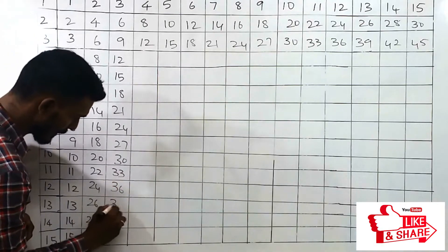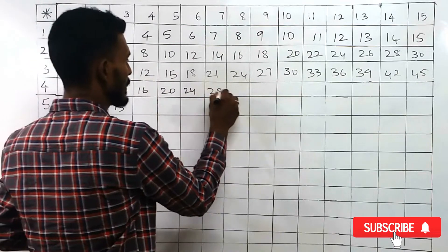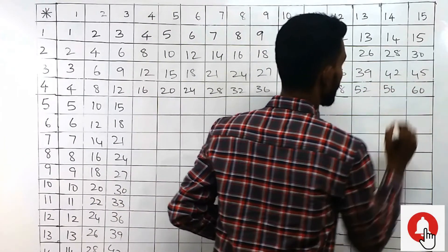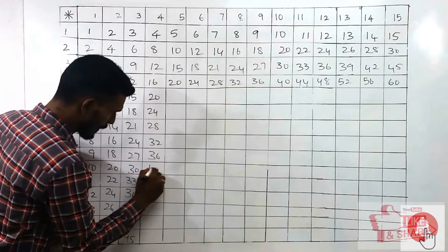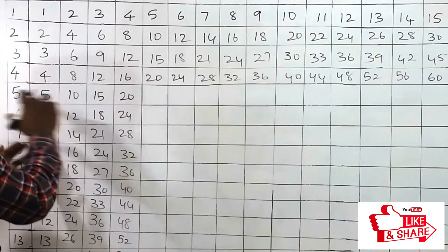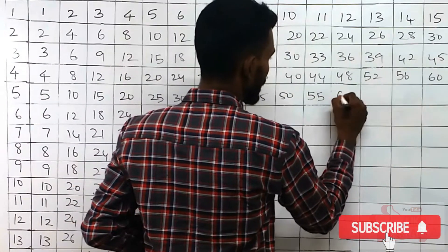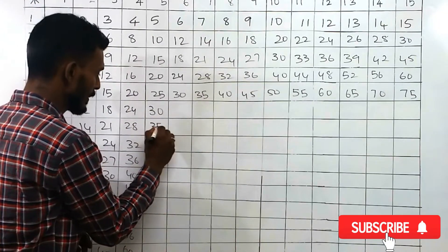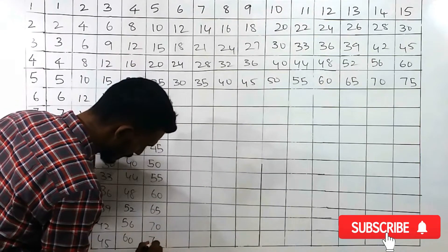In the fourth row, add 4 to the number: 8, 12, 16, 20, 24, 28, 32, 36, 40, 44, 48, 52, 56, and 60. In the fifth row we have to add 5 to each number, right? Here I will add 5 to this number. So we get 10, 15, 20, 25, 30, 35, 40, 45, 50, 55, 60, 65, 70, and 75. Write down these things in the column as well: 30, 35, 40, 45, 50, 55, 60, 65, 70, 75.